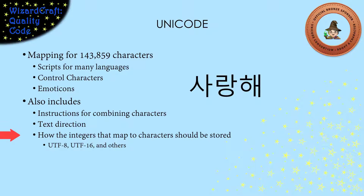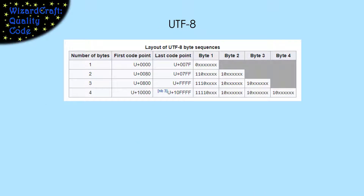Every time you have an integer, you have to think about how you are going to store that integer. Unicode has a number of ways that it can choose to store the integer: UTF-8, UTF-16, and there are a bunch of others as well. UTF-8 is a variable length encoding. That means that some values will be stored in shorter lengths and some values will require more bytes to encode them.